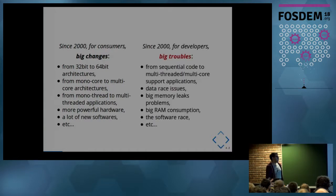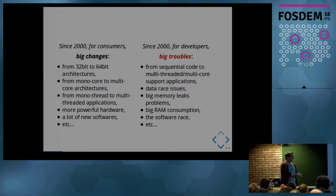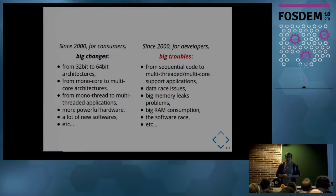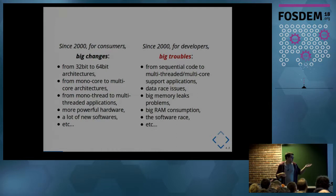Those big changes, for developers, are really big troubles — we have to switch from sequential code to multithreaded and multi-core support applications, which introduced data race issues and big memory leak problems. And with this competition, we have to build software with a lot of features that we don't actually test a lot, which introduces those big problems.